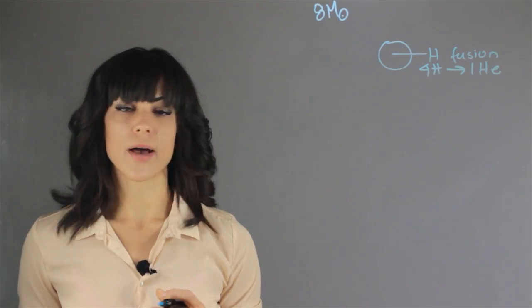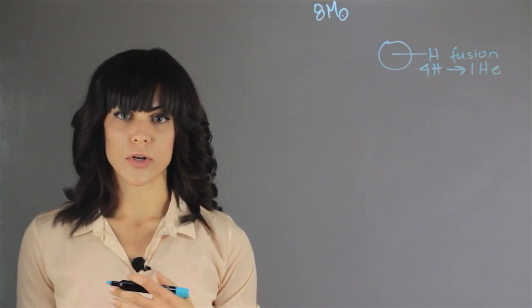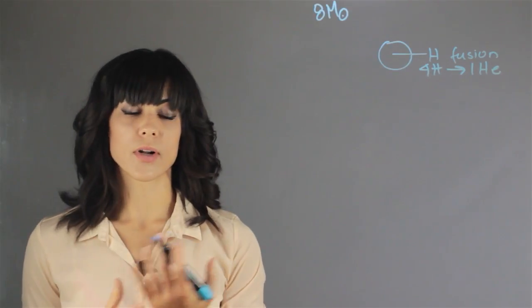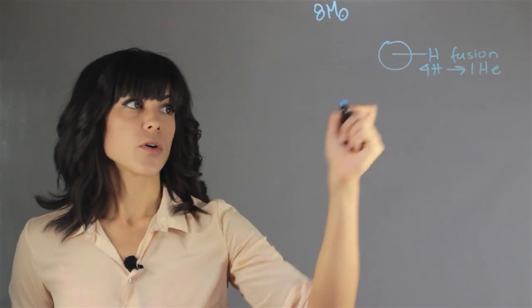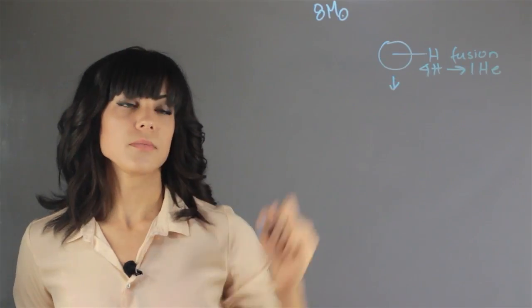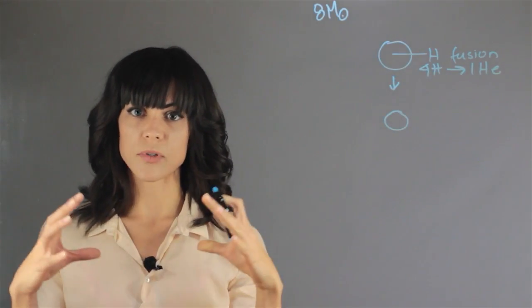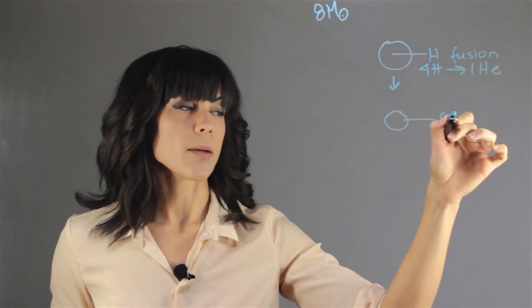So now you have this hydrogen fusion and you are supporting all this helium. What happens when you run out of hydrogen? The next thing that happens is that your core will start to collapse on its own gravity. You get core collapse.